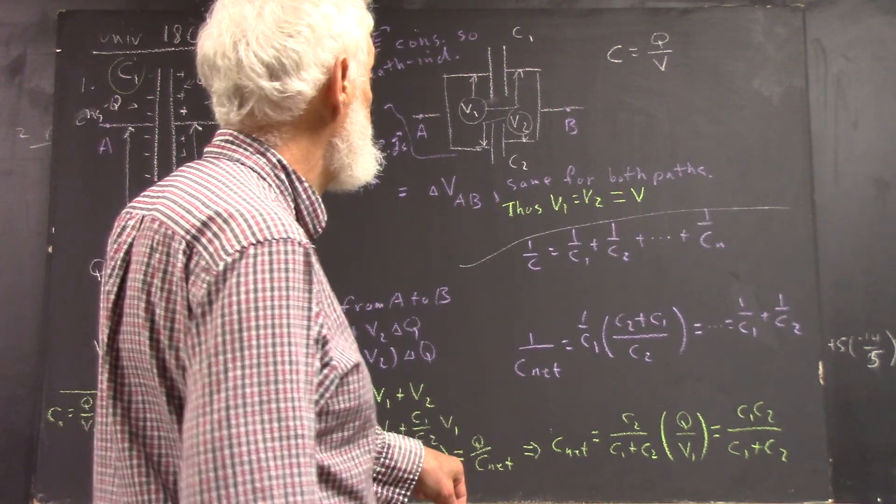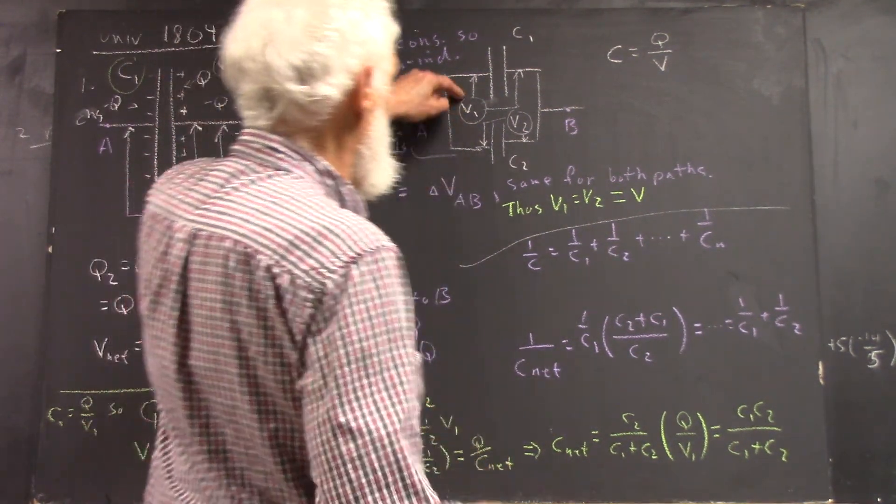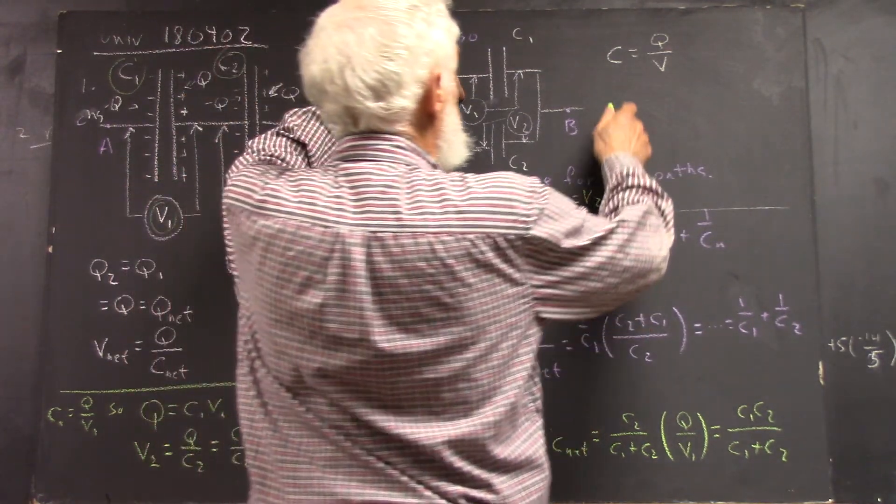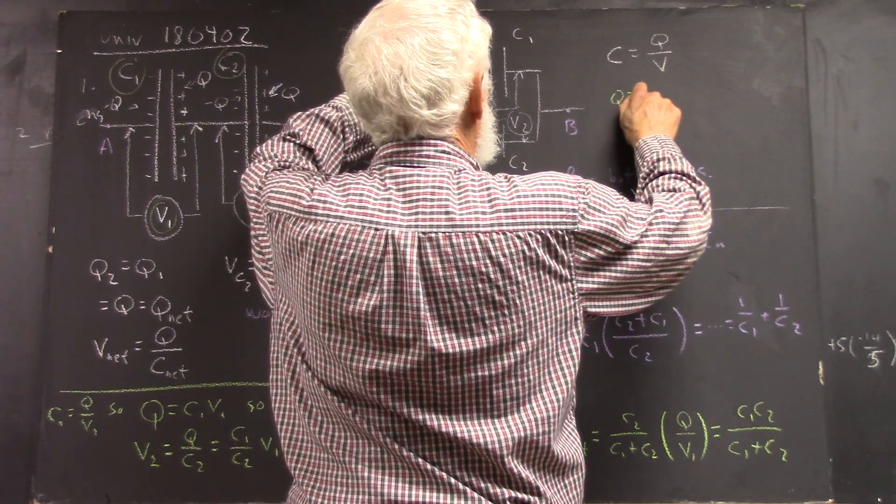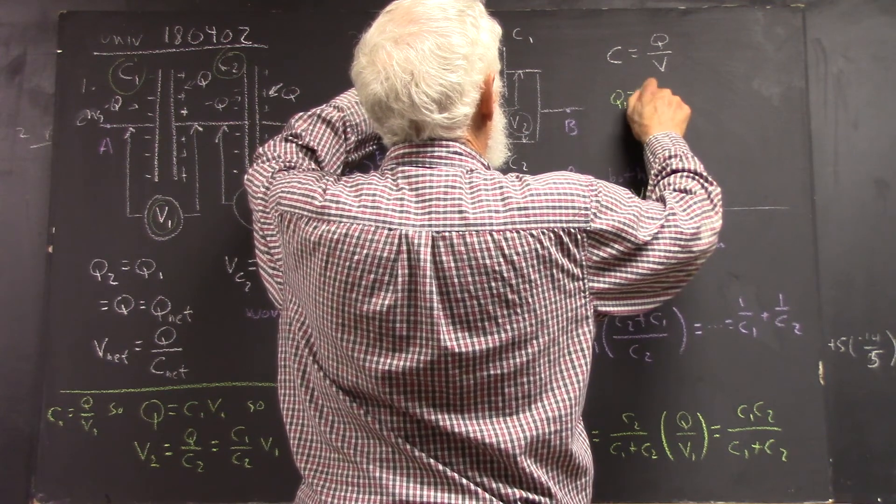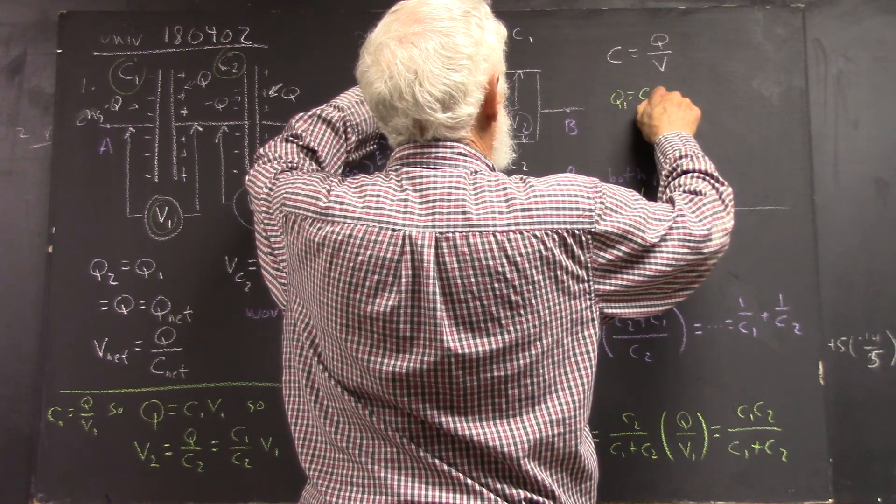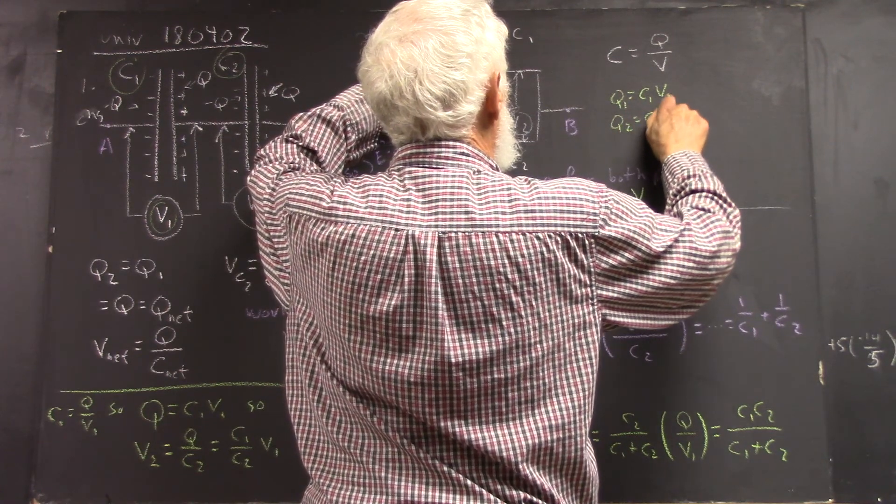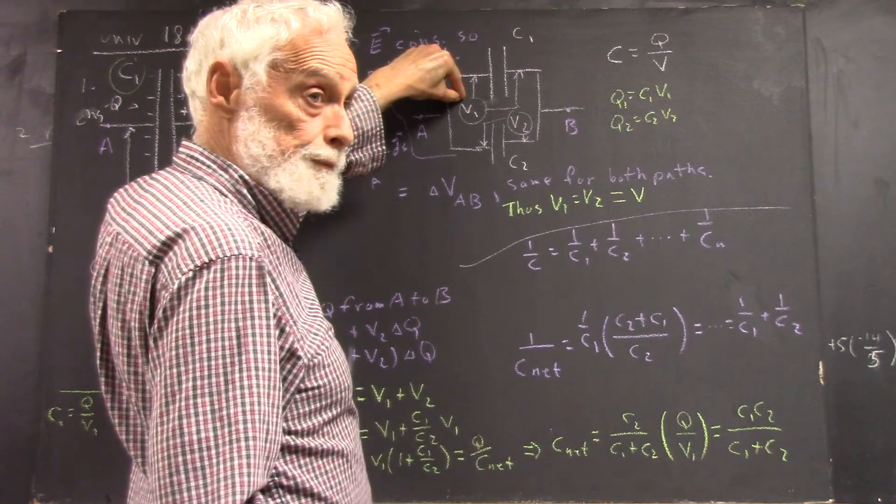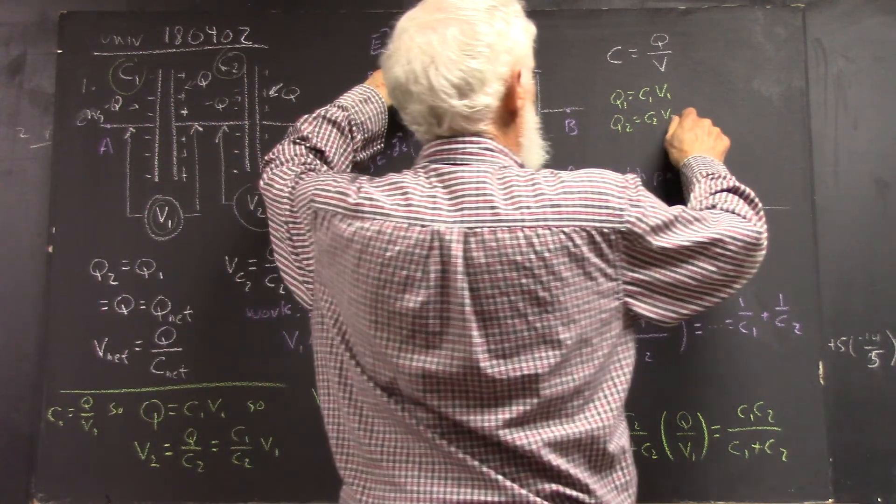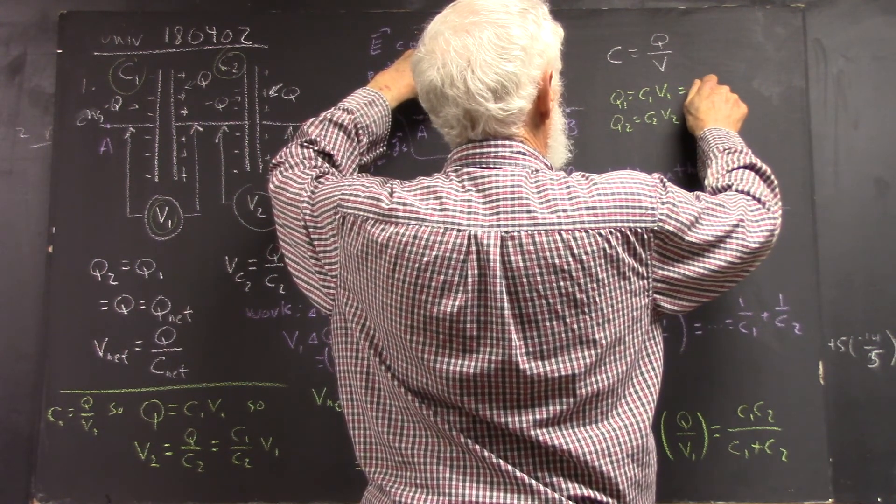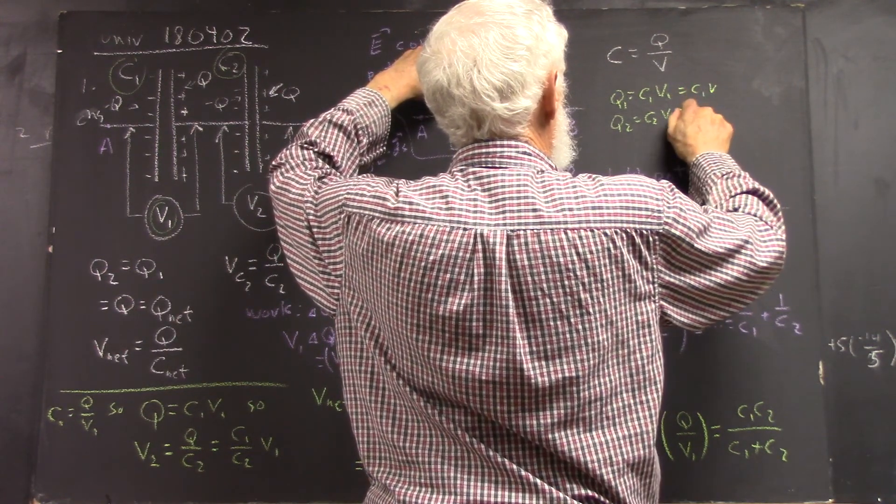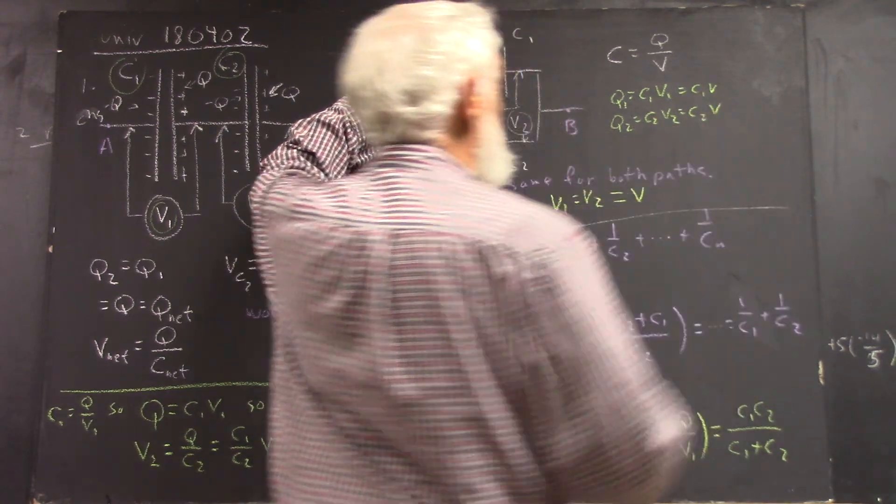Okay, so first capacitor, Q1 equals C1V1, Q2 equals C2V2. Of course, V1 equals V2, so that's C1V, that's C2V.